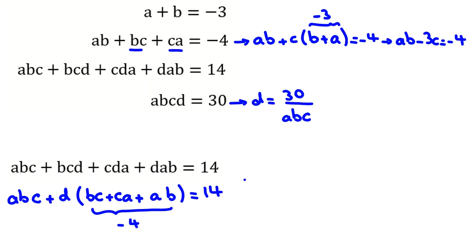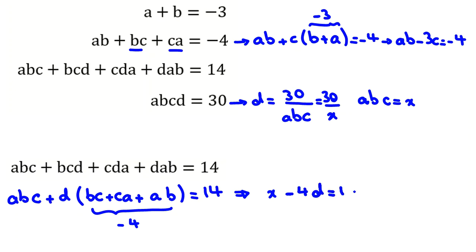Let me call abc = x, so d = 30/x. Substituting into abc - 4d = 14 gives x - 4(30/x) = 14, which is x - 120/x = 14.